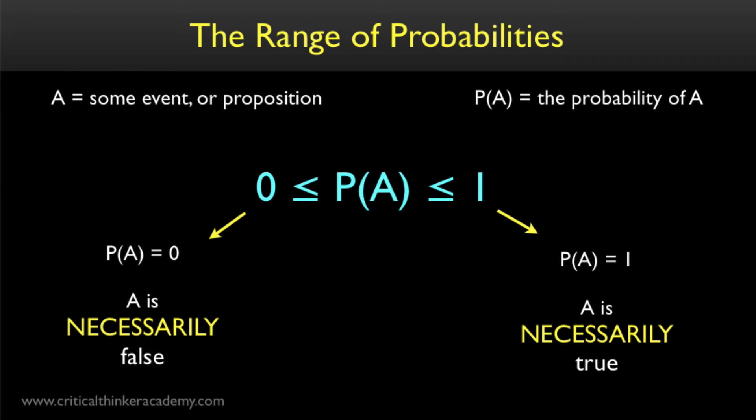Now, in philosophy, we have a pair of concepts that we often use to distinguish events or propositions at the extremes from those that aren't at the extremes. If a proposition or event has probability one, that means it must be true, or it must occur. And we say that the proposition is necessarily true, or that it's a necessary event.